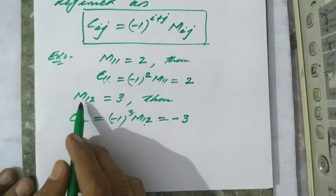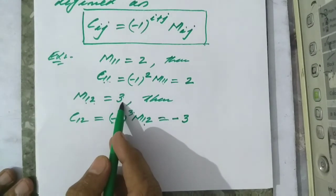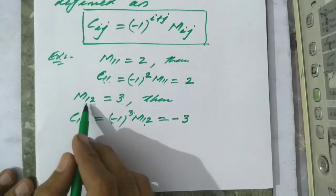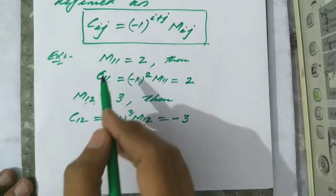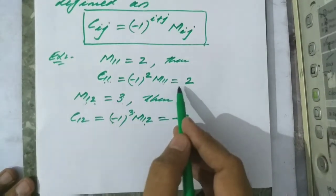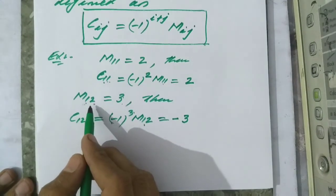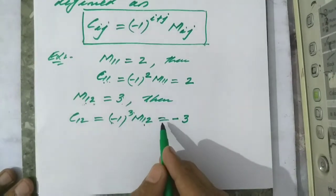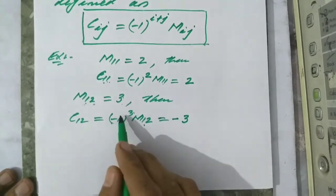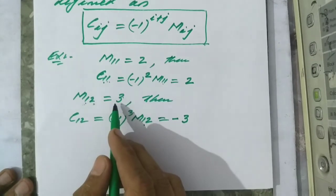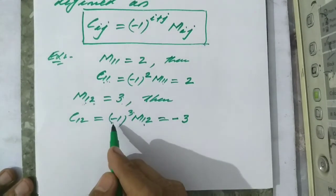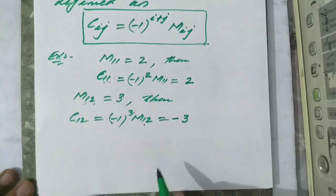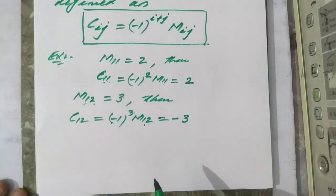So we conclude: if the sum of the row and column order is even, the cofactor is exactly equal to the minor. If the sum is odd, the cofactor is equal to the additive inverse of the minor — the sign is changed. For example, if the minor is −3 then c12 = +3, and if the minor is +3 then the cofactor is −3. This is the concept of cofactor of an element of a square matrix.